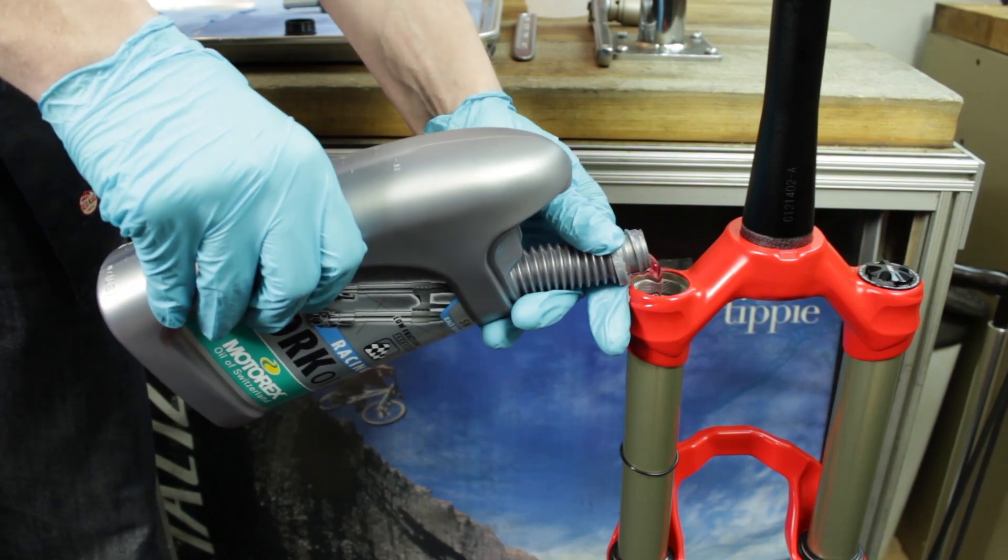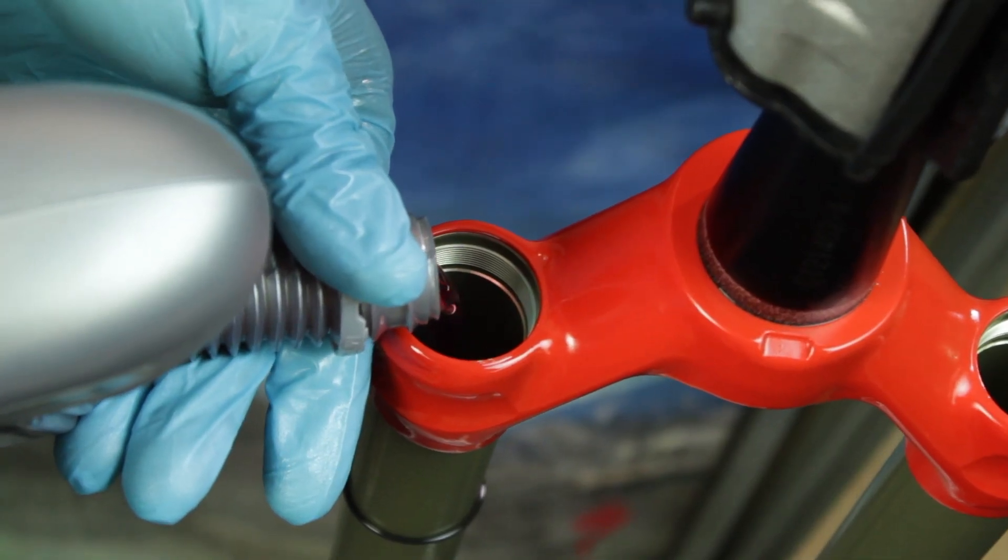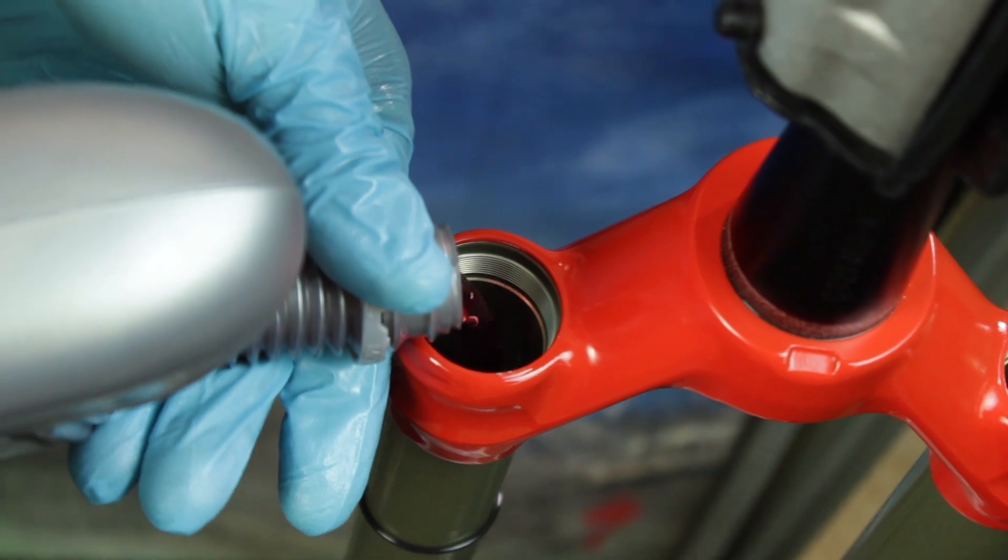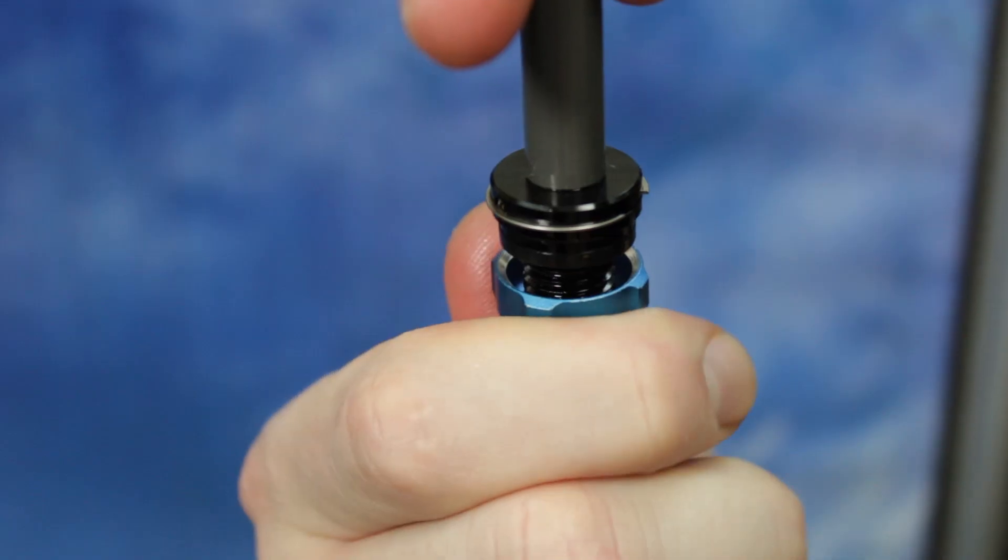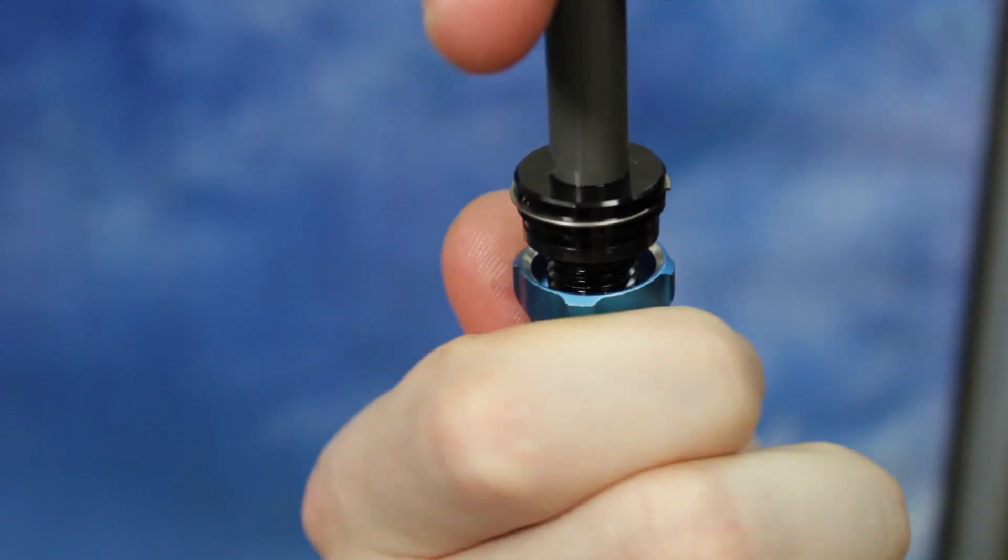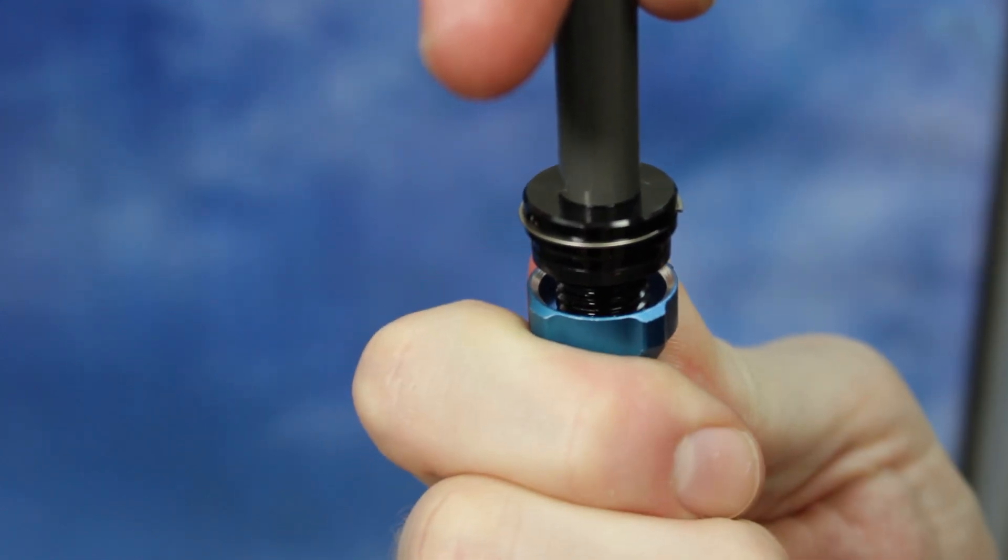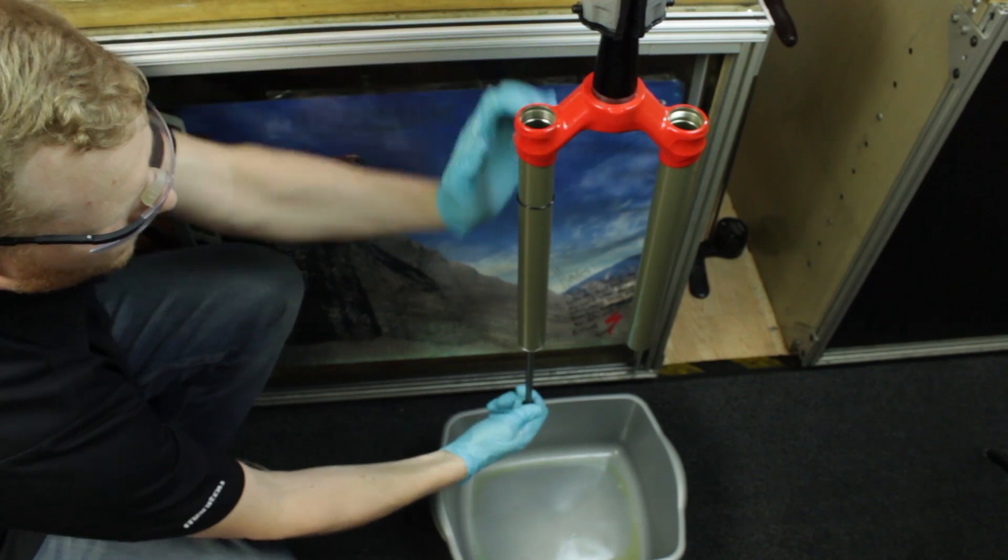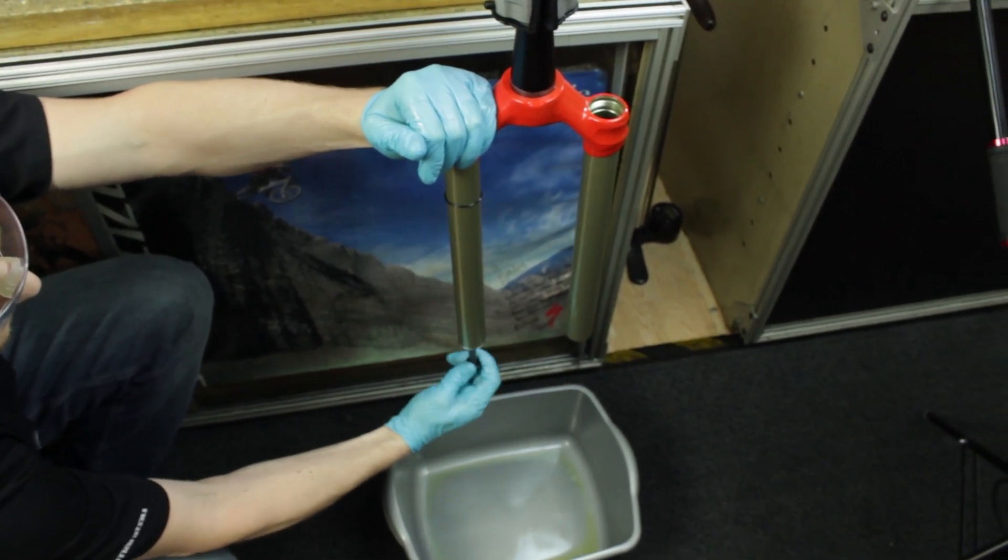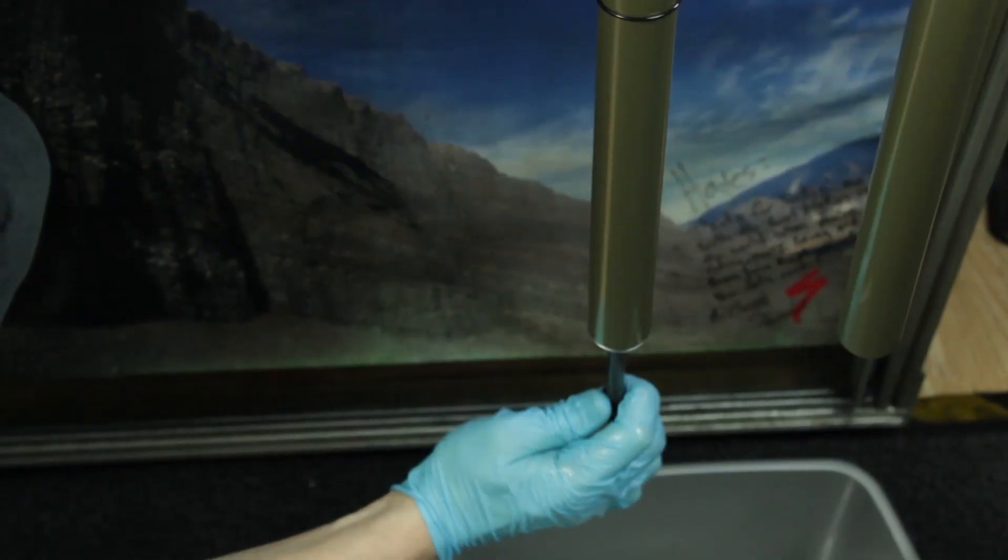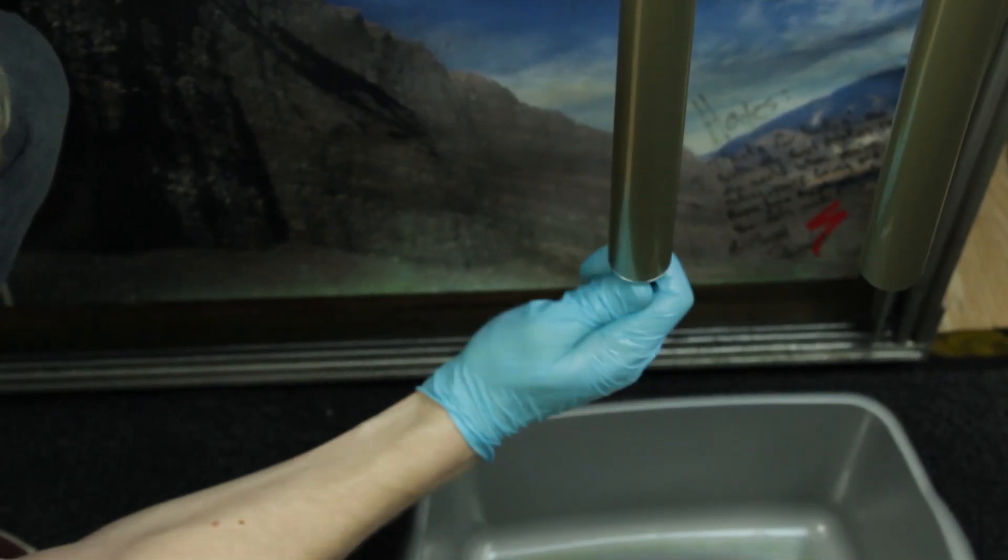Place the crown steer assembly in the upright position. Pour fork oil into the inner leg until the oil height is about one inch from the threading. Make sure that the rebound is three clicks from full rebound. Cycle the rebound rod up and down about 15 times to bleed any air out of the TPC assembly. Fully extend the TPC rebound rod before setting the proper oil height.